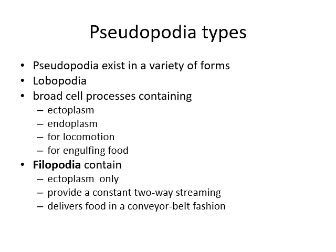Pseudopodia exist in a variety of forms. Lobopodia are broad processes containing both ectoplasm and endoplasm, used for locomotion and engulfing food. Filopodia contain only ectoplasm and provide two-way constant streaming movements, delivering food in a conveyor-belt fashion.